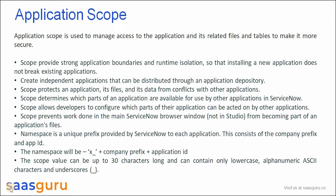This means that if there are any components which we want to update from other applications, or any applications from Global Scope, we can also configure that. Scope prevents work done in the main ServiceNow browser window from becoming part of an application file. There is a unique namespace or nomenclature provided by ServiceNow to each application, which consists of a Company Prefix and Application ID.